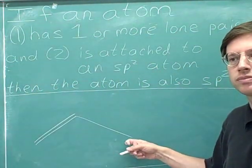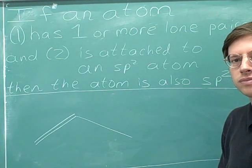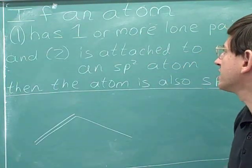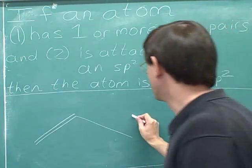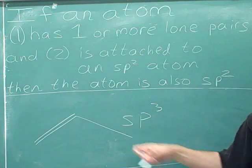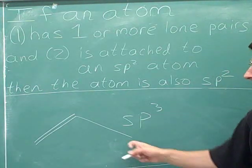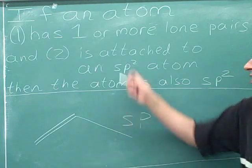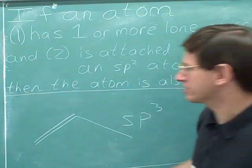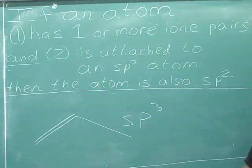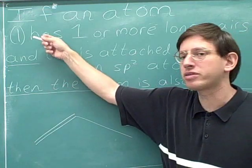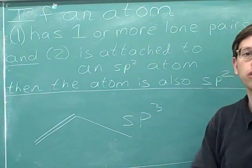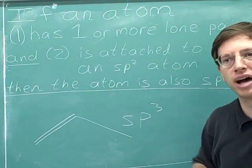What's the hybridization of this carbon? The exception does not apply here because there are no lone pairs, so we just use our normal rule — this is an sp3 carbon. Notice that this carbon does satisfy our second condition: it's attached to an sp2 atom. But that's not good enough. You have to be attached to an sp2 atom and have one or more lone pairs. In order for this exception to apply, the atom has to satisfy both condition 1 and condition 2. If it only satisfies one of them, we don't use the exception.